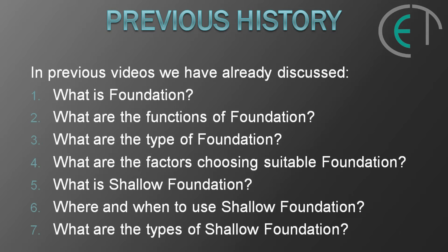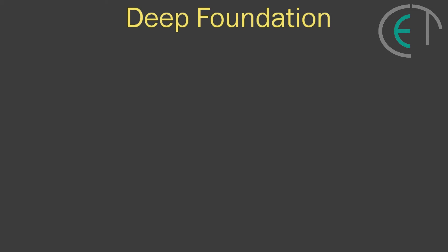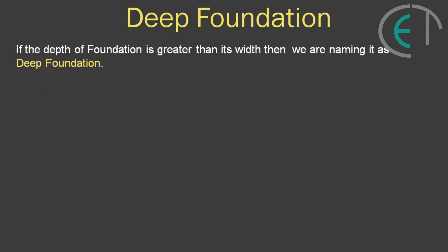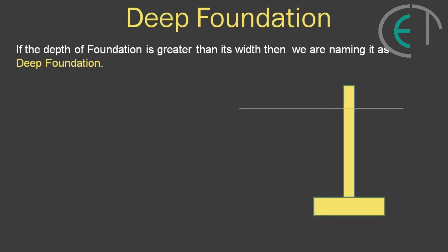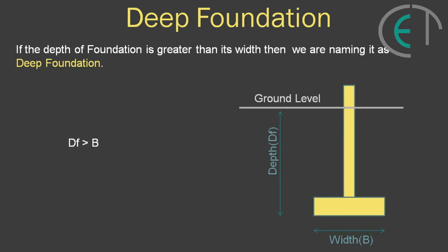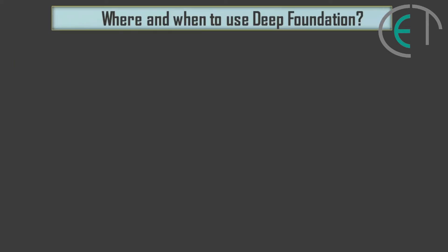In this video we are going to discuss deep foundations. If the depth of the foundation is greater than its width, we name it a deep foundation. In this figure you can see a deep foundation — this is the ground level. We determine the depth from ground level to the bottom of the foundation, denoted as df, and the width is denoted as b. So from the definition, df is greater than b.